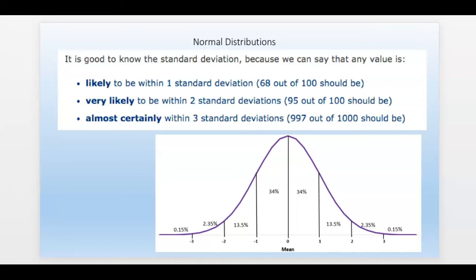Because once we find it, we can say that it's likely, I mean 68 out of 100 of our data values should be within one standard deviation of the mean. And it's very likely to be within two standard deviations of the mean, about 95 out of 100. And it's almost certainly within three standard deviations of the mean. 997 out of 1,000 should be within the mean.